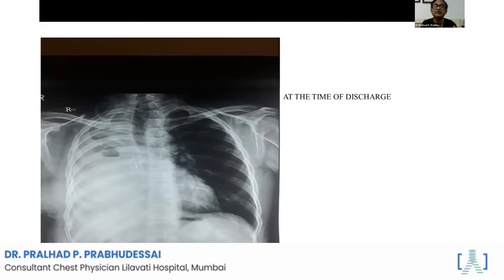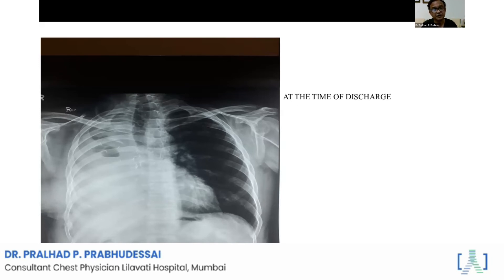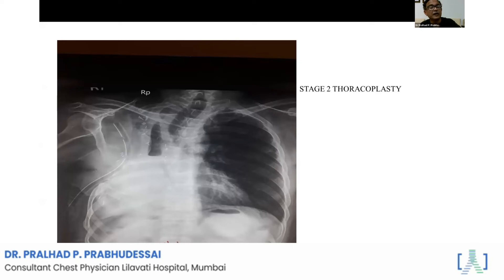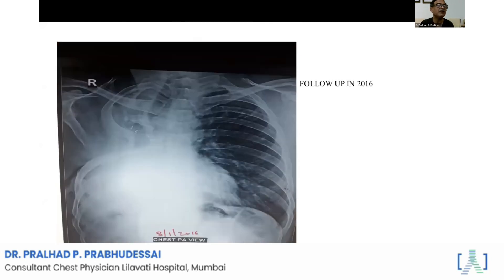He developed a bronchopleural fistula afterwards with persistent sputum secretions from the thoracic cavity and a fluid level visible on imaging. Surgery itself went well, but he developed a bronchopleural fistula because he had disease in the other lobe also, and persistent sputum positivity. Whenever we operate on a sputum-positive patient to decrease bacterial load, there is a chance of developing a bronchopleural fistula.